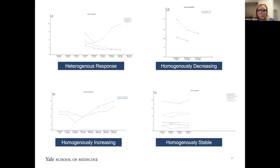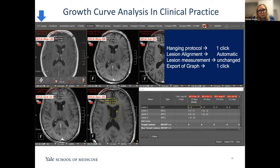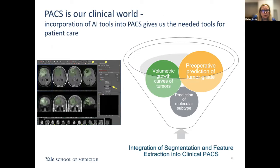With these growth curves, you know when you need to start treating. We also have different presentations: homogeneously decreasing, homogeneously increasing, and homogeneously stable. The paper Gabriel is putting together suggests we need to start incorporating these growth curves — now that we can generate them in PACS — into the criteria for treatment assessment. Gabriel also developed a layout format where a single button click enables a hanging protocol, lesion alignment, and lesion measurement rapidly, so you can generate these growth curves in real clinical time and generate graphs for clinicians to do analysis.